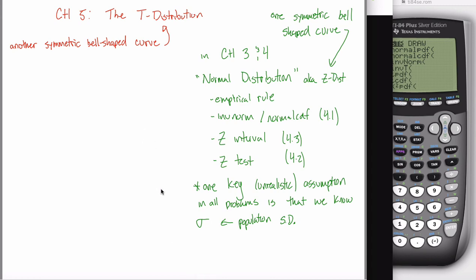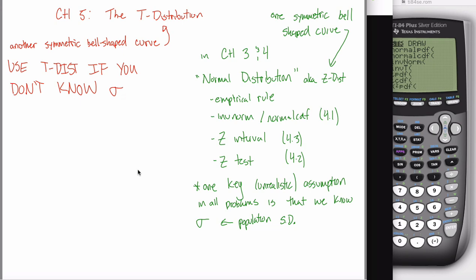The short takeaway — and I'll write this in all capitals — use the t-distribution if you don't know sigma. It's that simple. If you're estimating means and you don't know the population standard deviation, you can't use the z-distribution. That's why in every single problem so far, I've told you the population standard deviation sigma every time. Anytime we've been talking about numeric data, I've been giving you sigma. If you don't know the population standard deviation, you can't use the z (the normal distribution) — you've got to use the t-distribution.